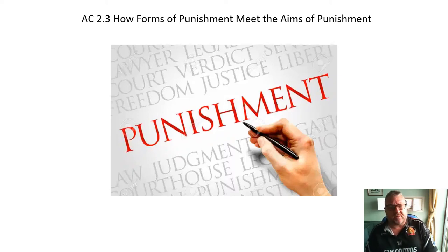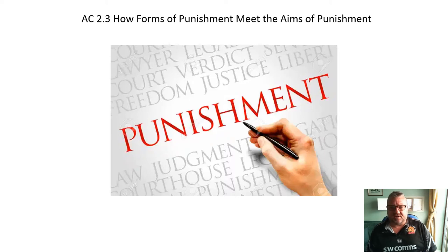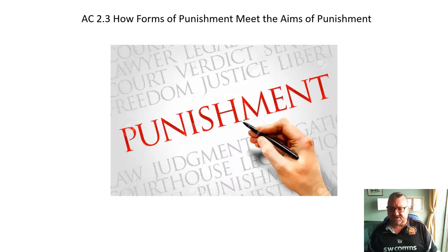We're now moving on to AC 2.3. In AC 2.2, we were introduced to the five aims of punishment. Now what we've got to look at is how forms of punishment in the UK meet the aims of punishment. This is much more an evaluation style AC, so the questions you're going to get on this in the exam are going to be worth more marks. I'm going to spend quite a bit of time on this and we'll look at the strengths and weaknesses of each of the forms of punishment in today's society and how they meet those five aims.